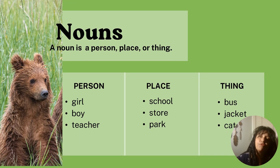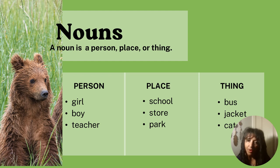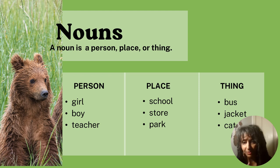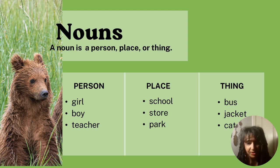So let's first go over the parts of speech that we're going to be talking about today. We're going to start with nouns. How many of you already know nouns are person, place, animal, thing, idea, or an event? So here's the very basic ones. A person: girl, boy, teacher.